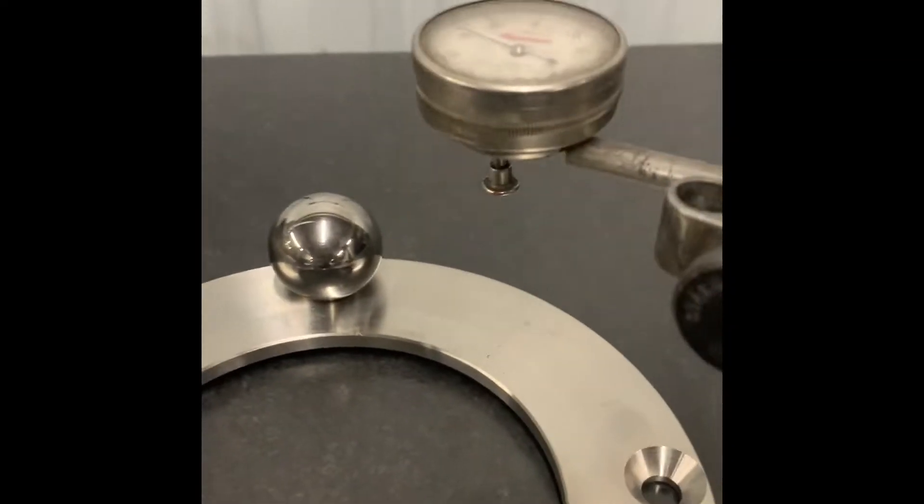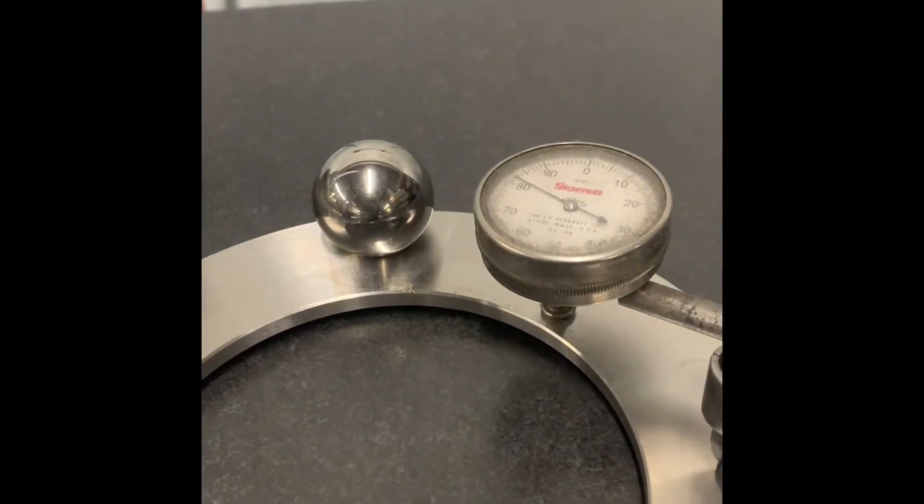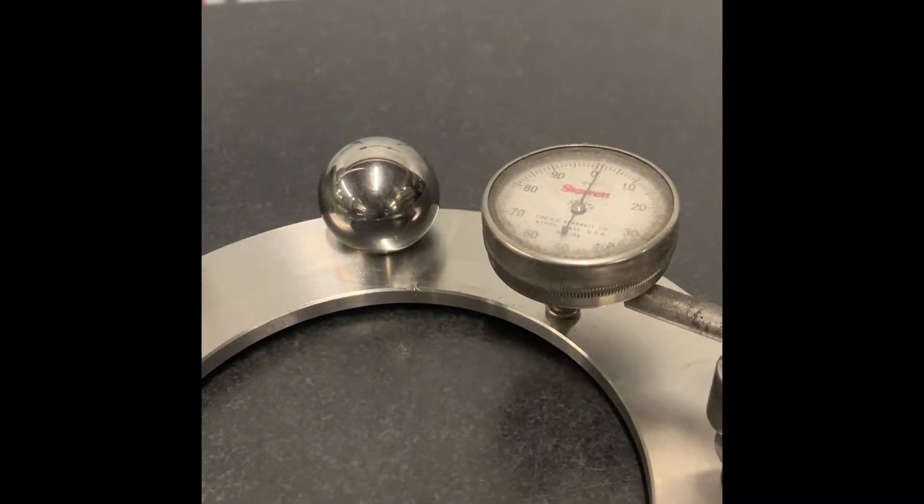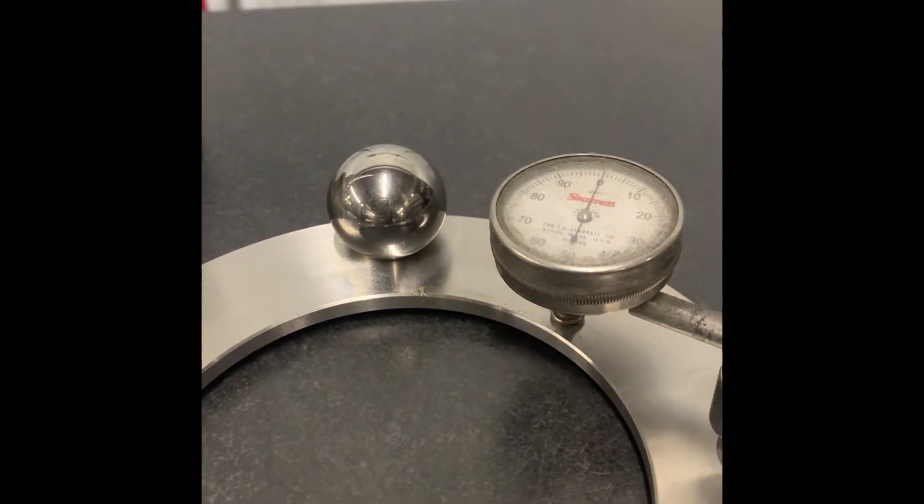First we're going to take our height stand and zero it out on the top surface here. Right there, zero out my gauge.